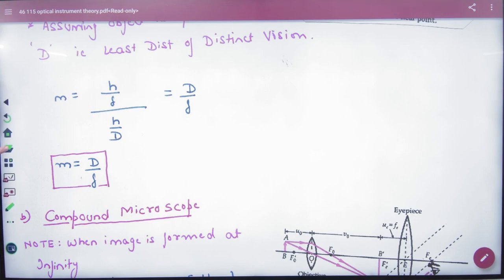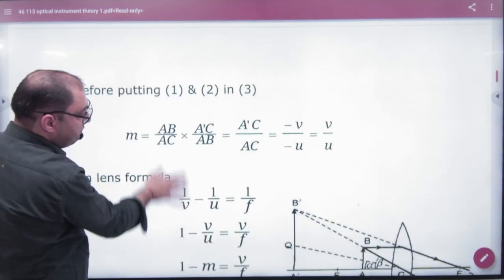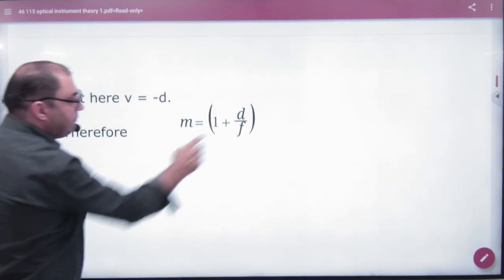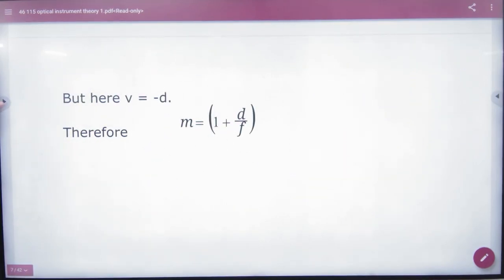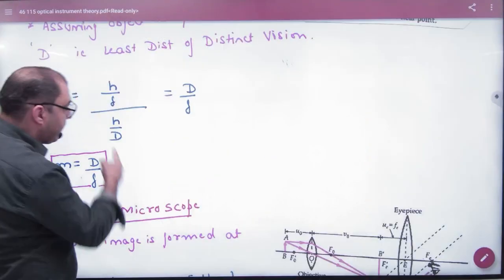What was the first formula? What was the magnifying power when it was finite distance? 1 plus D by F. And in infinity case, what is the formula? D by F.